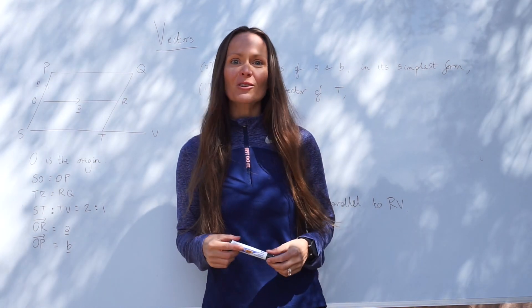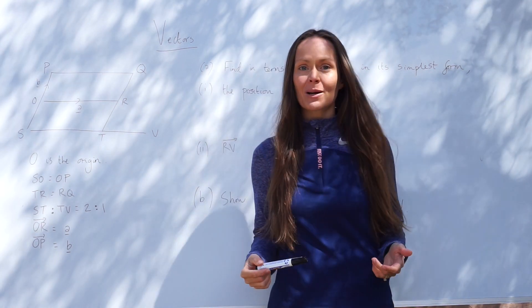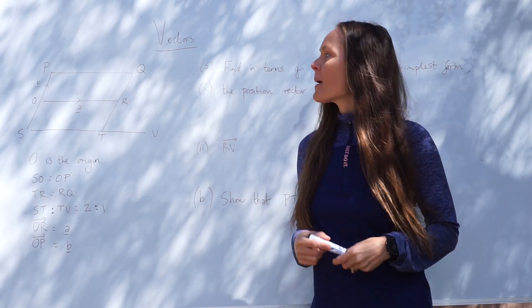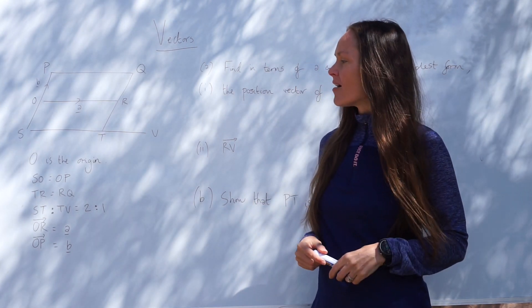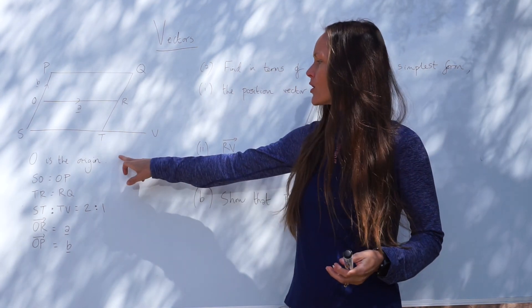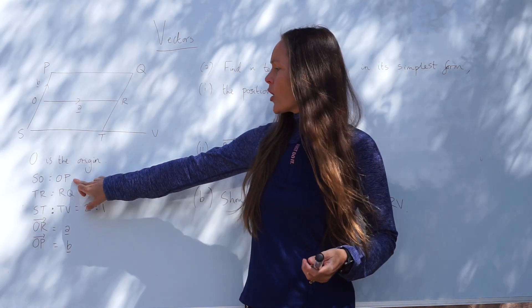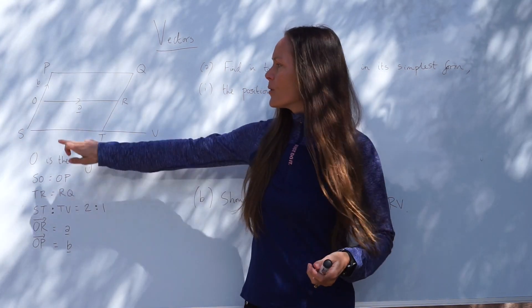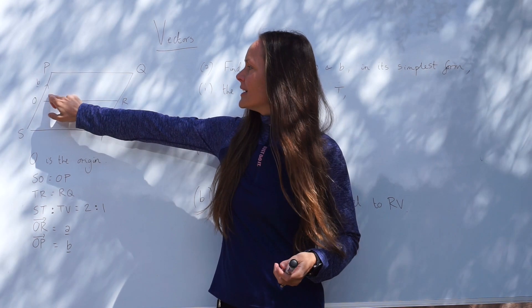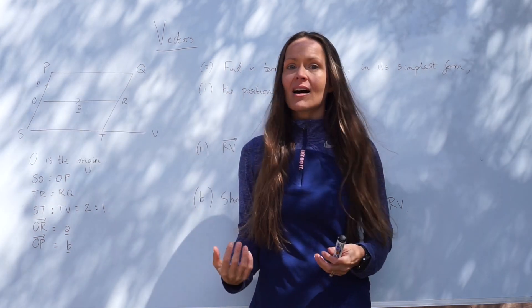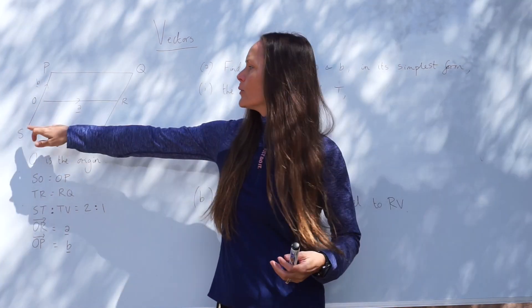Hey guys, in this lesson I'm going to show you another vector exam question. So we've been given a parallelogram OPQR, and they tell us that O is the origin. SO equals OP, so this line is equal in length to this one, and because they lie on the same straight line, we know they're parallel.